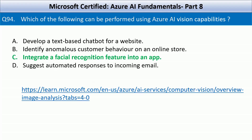You will use Azure bot service to develop a text-based chatbot for a website. Identifying anomalous behavior on an online store falls under Azure Machine Learning or Anomaly Detector. And Azure AI language, which is Language Studio or Text Analytics, is used to suggest automated responses to incoming email. There is a link on your screen — go through the link to understand more about the image analysis capabilities of Azure AI vision.